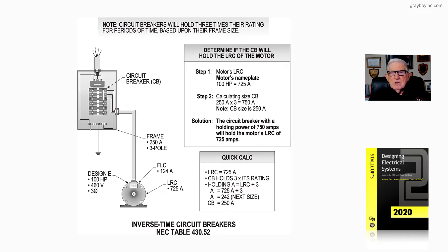That's what the solution's telling us: the circuit breaker has a holding power of 750 amps for a period of seconds based upon the frame size of the circuit breaker that you'd obtain from Square D, Cutler Hammer,